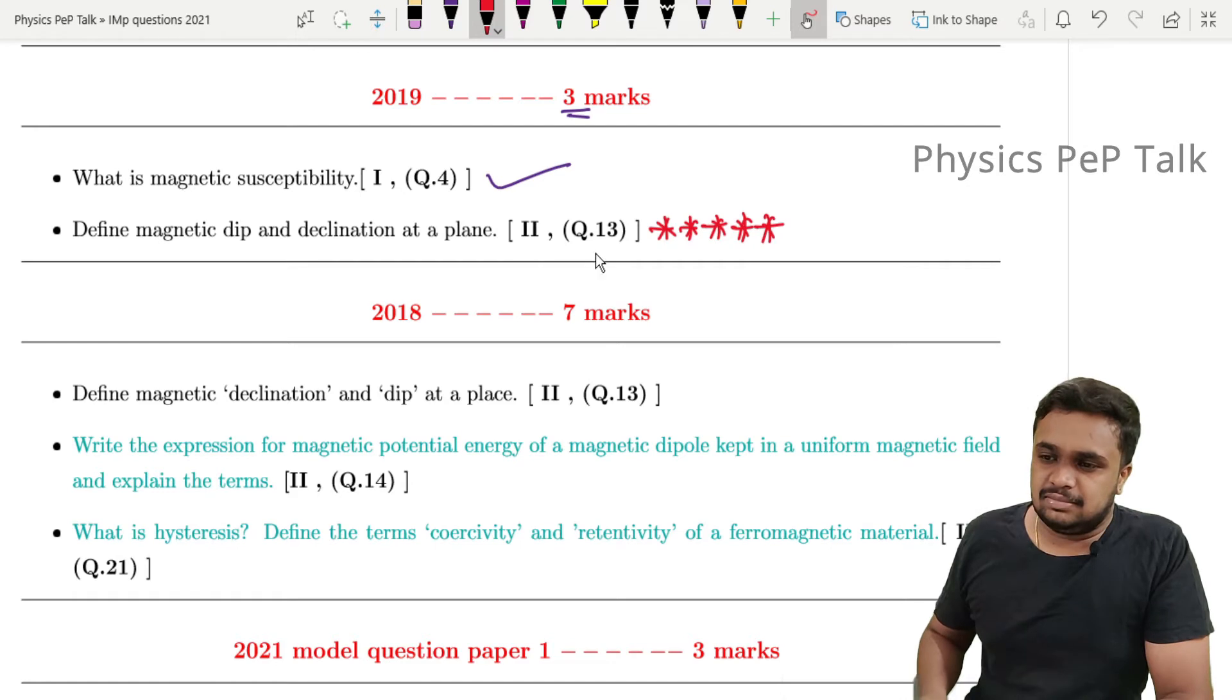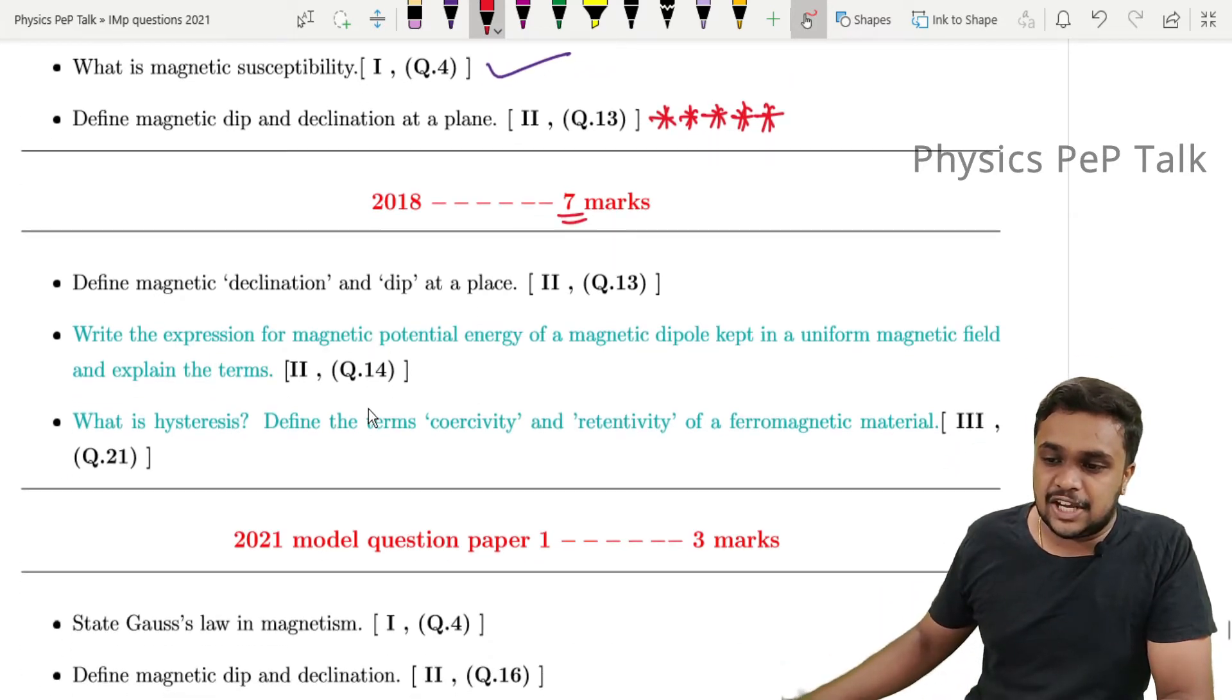This was asked for 2 marks in 2018. 'Define magnetic declination and dip at a place' - this is an important topic to study.